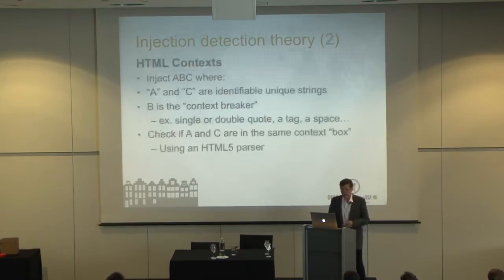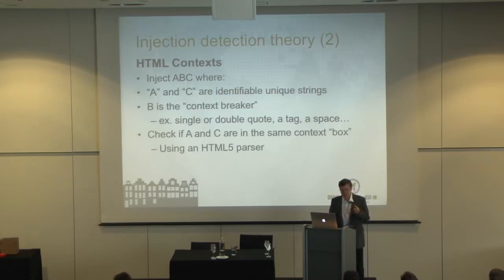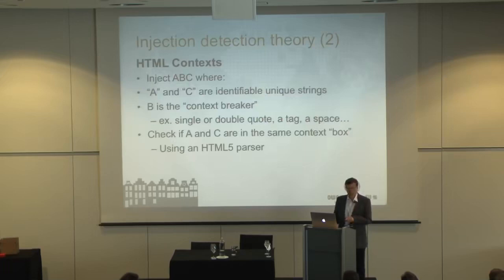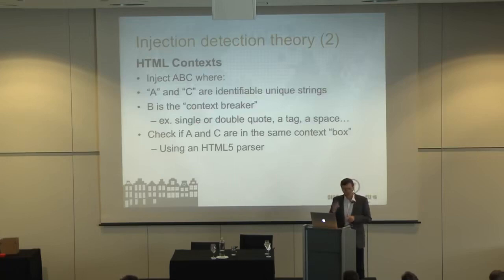In an HTML context we can inject like A, B, C where A and C are just markers — an identifiable string that wouldn't occur otherwise — and B is the context breaker, which can be a single or double quote, a tag, or even a space as this boundary. Then we check: if A and C are in the same box, we're good and user input is in jail. If A and C end up in different boxes, it means B was able to draw a boundary and we have a problem. The real reliable way to do this is using an HTML parser.